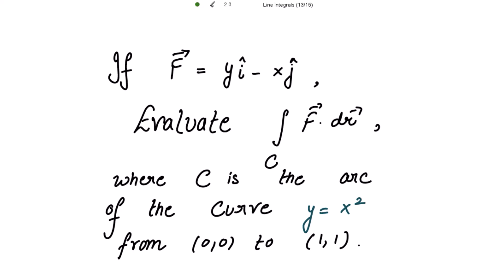If F vector is equal to y i cap minus x j cap, evaluate the integral of the dot product of F vector with dr vector along the arc C, where C is the arc of the curve y equal to x squared from (0,0) to (1,1).